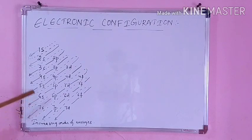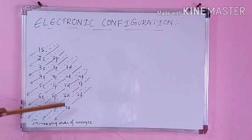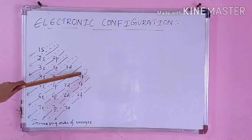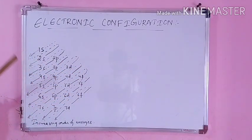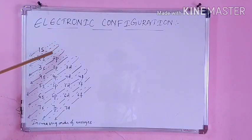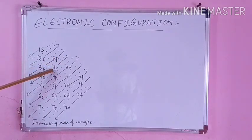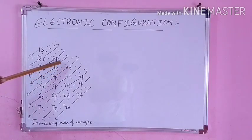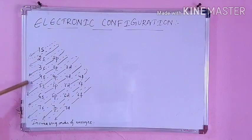In this diagram, 1s to 7s orbitals are written. Note that 1p orbital does not exist, so P starts from 2p to 7p. Similarly, 3d orbital starts from 3d, and F orbital starts from 4f. Following the dotted line on the diagram: the lowest energy is 1s, then 2s, then 2p, then 3s. After 3p, you should not go for 3d directly — you should come to 4s first, then 3d, then 4p, then 5s.